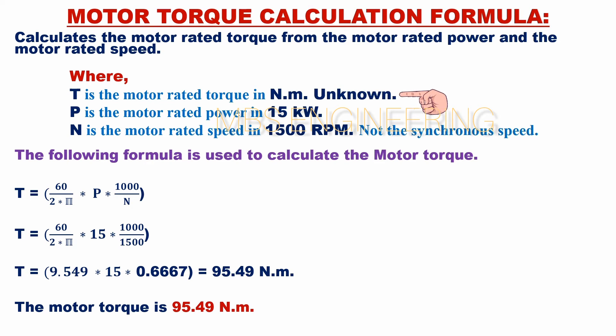P is the motor rated power at 15 kW. N is the motor rated speed at 1500 RPM or revolutions per minute. It is not the synchronous speed. The following formula is used to calculate the motor torque.